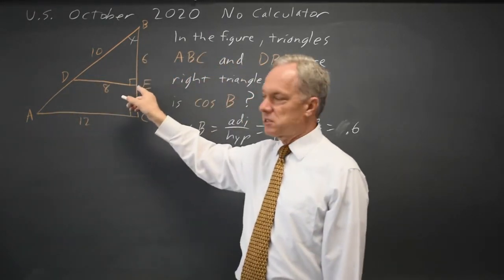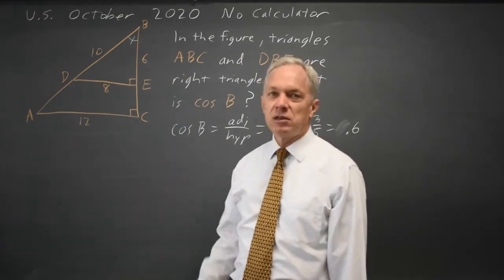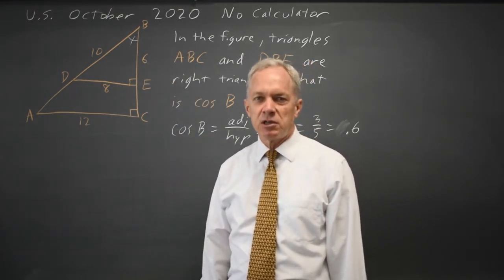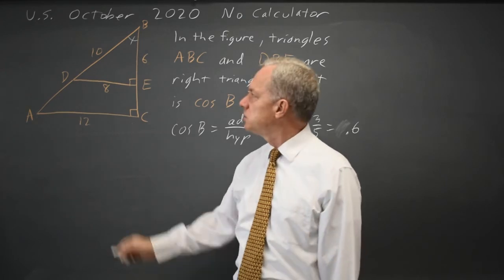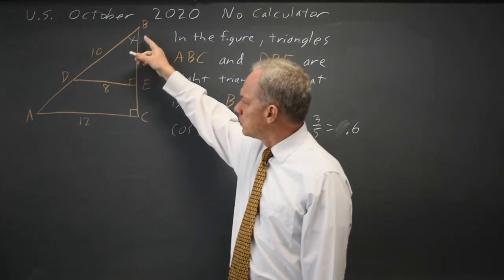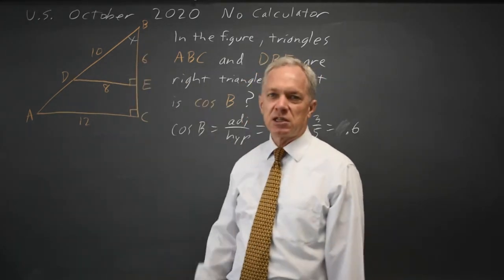Since BE is 6, BC would be 9, but we don't need any of that information. We can find the answer to the question just from triangle DBE that they've given us.